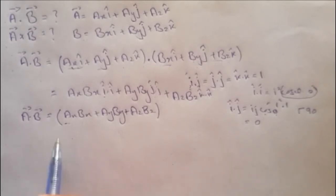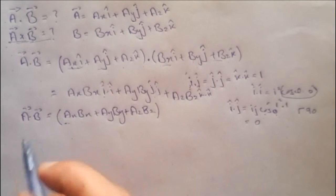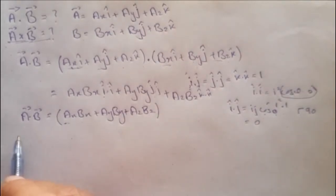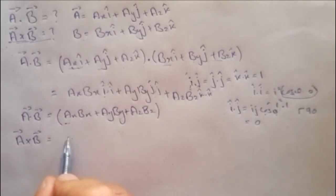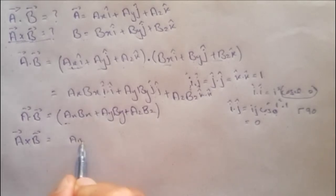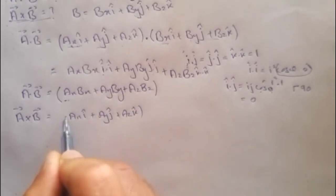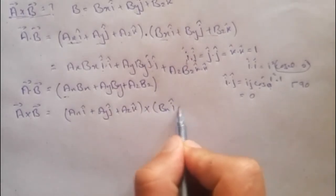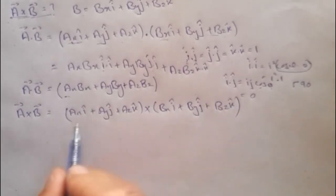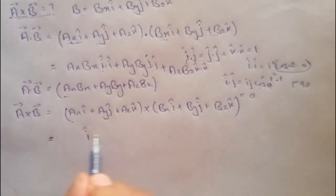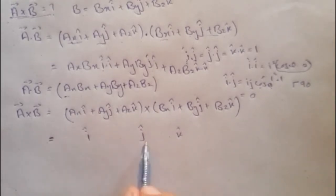Now let's solve the cross product between the two vectors. For the cross product, a cross b equals (ax·i + ay·j + az·k) cross (bx·i + by·j + bz·k). To compute this, we will use the determinant method with i, j, and k in the first row.